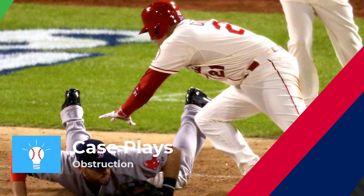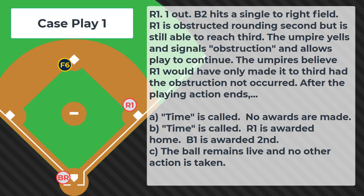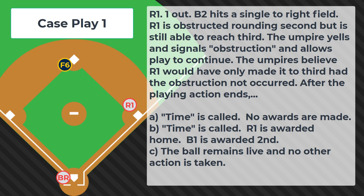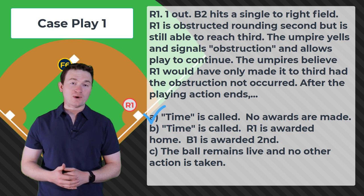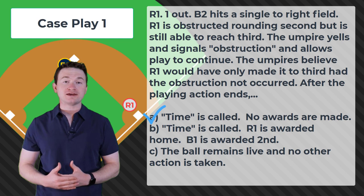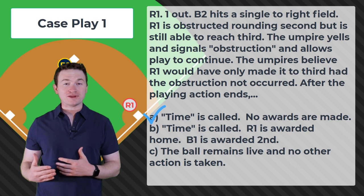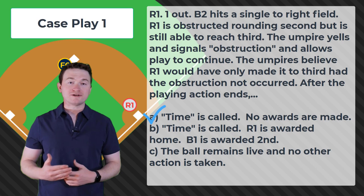Case play number one: R1, one out. B2 hits a single to right field. R1 is obstructed rounding second but is still able to reach third. The umpire yells and signals obstruction and allows play to continue. The umpires believed R1 would have only made it to third had the obstruction not occurred. After the playing action ends: A, time is called and no awards are made; B, time is called, R1 is awarded home, B1 is awarded second; C, the ball remains live and no other action is taken. The correct answer is A — time is called and no action is taken. R1 was obstructed while rounding second and ultimately made it to third, so the umpires leave the runner at third. But because obstruction is a delayed dead ball, by rule once the playing action ends, we have to call time.